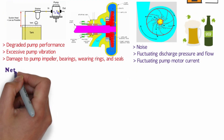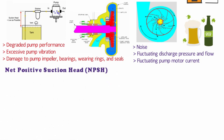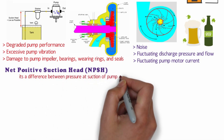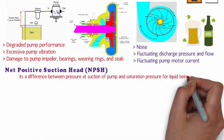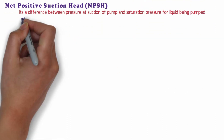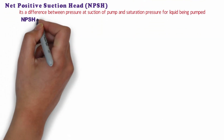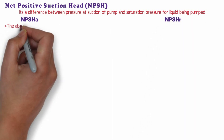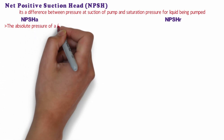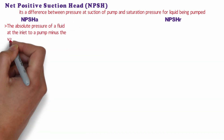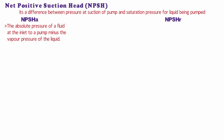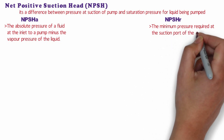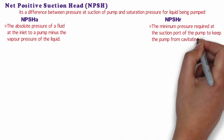The next important terminology is Net Positive Suction Head, or NPSH. Net positive suction head is the difference between the pressure at the suction of the pump and the saturation pressure of the liquid being pumped. There are two calculations involved in NPSH: Net Positive Suction Head Available (NPSHa) and Net Positive Suction Head Required (NPSHr). NPSHa is the absolute pressure of the fluid at the pump inlet minus the vapor pressure of the liquid. NPSHr is the minimum pressure required at the suction port of the pump to keep the pump from cavitating.